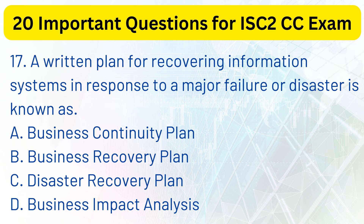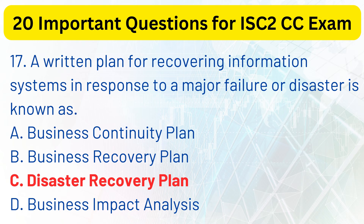The correct answer is c. Disaster recovery plan. Explanation. A written plan for recovering information systems in response to a major failure or disaster is known as a disaster recovery plan.